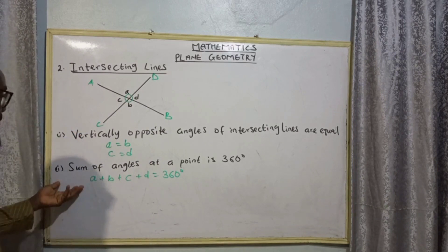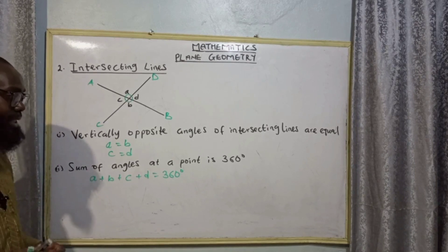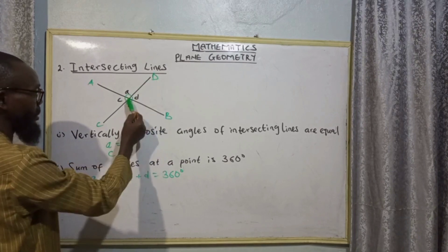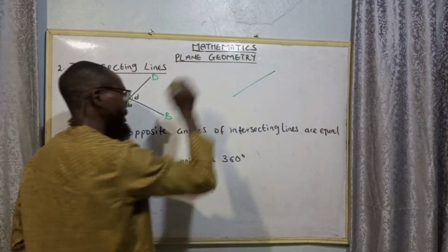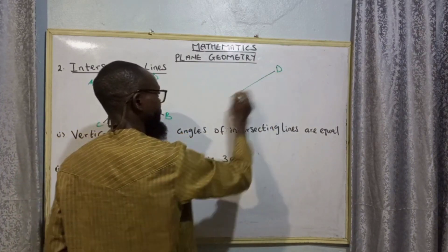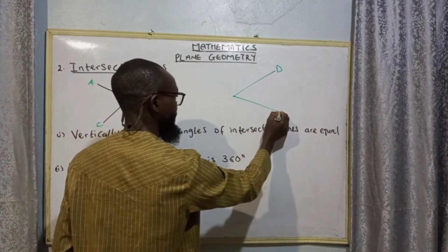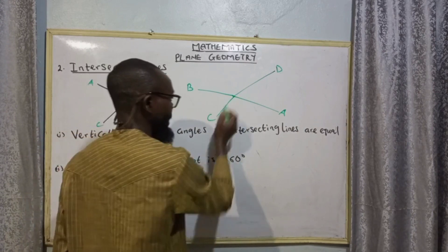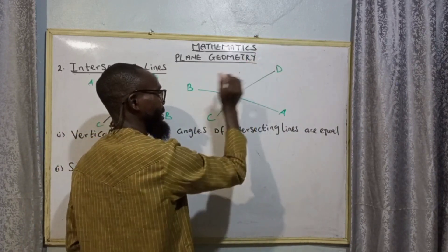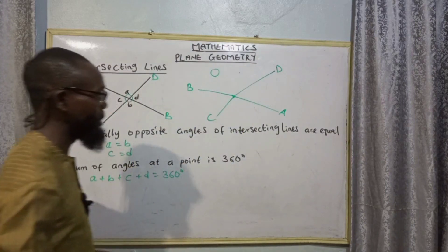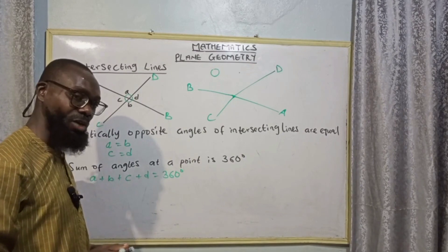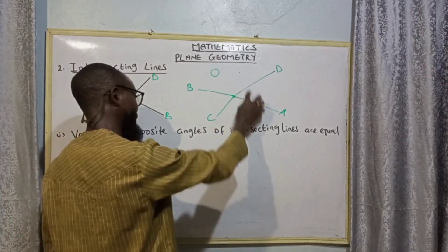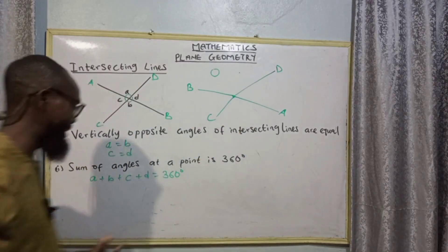The second theorem here is that the sum of angles at a point is 360 degrees. When lines O-A, O-B, O-C, and O-D all meet at a point, that point is like a circle — indeed, it's a circle. The sum of angles in a circle equals 360 degrees, meaning when you sum up any angles on this surface it will equal 360 degrees.